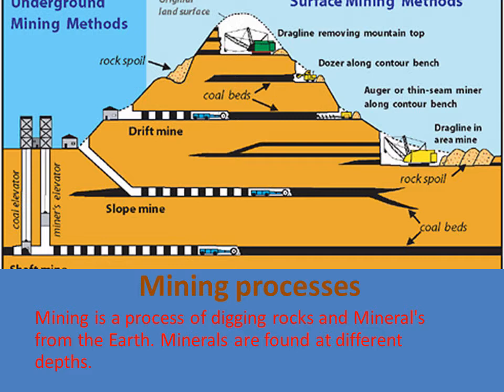Minerals are found at different depths, so for digging them out we use two methods of mining: one is surface mining and another is underground mining. In surface mining, when the minerals are very near to the surface, we use the surface mining method. Underground mining is divided into two parts: adit mining and shaft mining. Adit mining is used if the minerals are in a hilly side area, so we construct horizontal tunnels. In shaft mining, we construct vertical tunnels when the minerals are very deep underground.